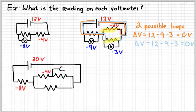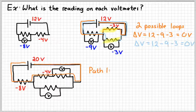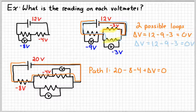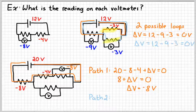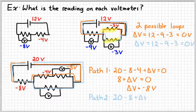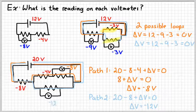Let's look at a third example. If we consider one path, our net voltage needs to be 20 minus 8 minus 4 plus the unknown, and that has to add up to zero — solving for the unknown gives negative 8. So 20 minus 8 minus 4 minus 8 equals zero. Going through the second path with just one resistor after the first, our net voltage would be 20 minus 8 plus the unknown equals zero, so the unknown has to be negative 12 volts.